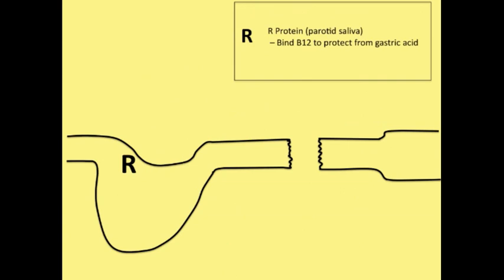Next, we have the R protein, and this comes from the parotid saliva. R protein is made in the saliva, and as we swallow, it comes down and enters the stomach and the GI tract. And it binds to B12, protecting B12 from gastric acid.